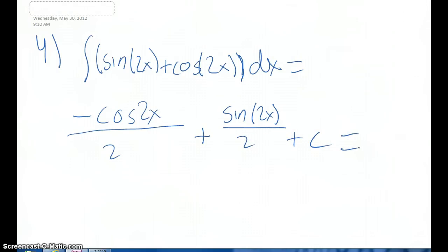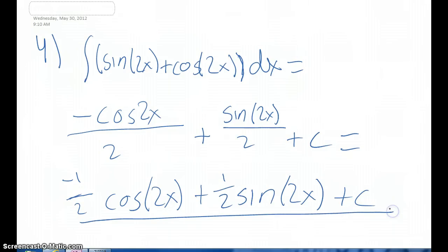Then we factor out a 1 half. So we get negative 1 half cosine of 2x plus 1 half sine of 2x plus c. And this is our antiderivative, which gives us the answer of b.